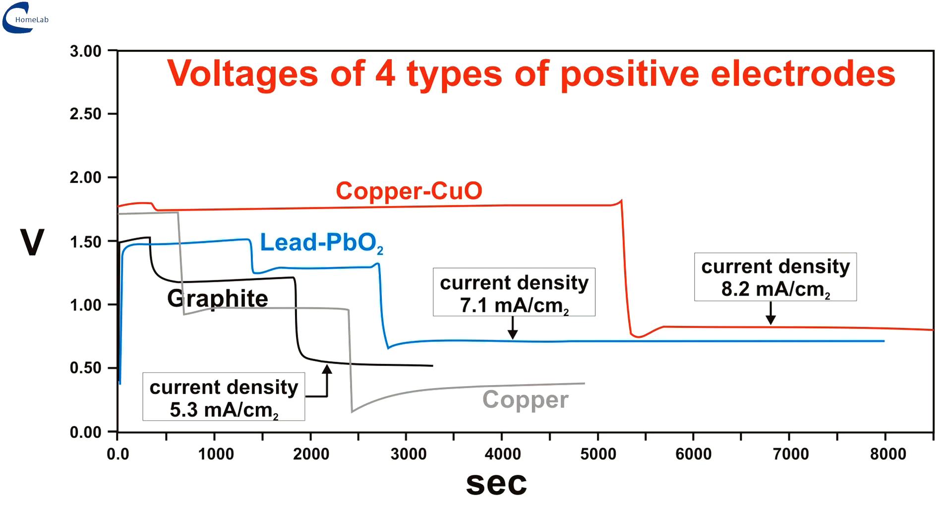The one that provides the worst performance is the untreated copper. The graphite electrode is penalized here because of its internal resistance superior to other metal electrodes, but this can be improved. In a future video I will explain how to build it.